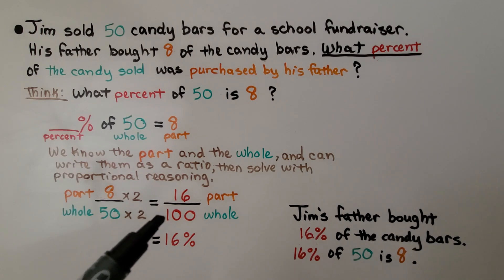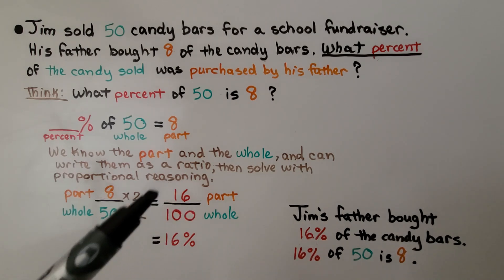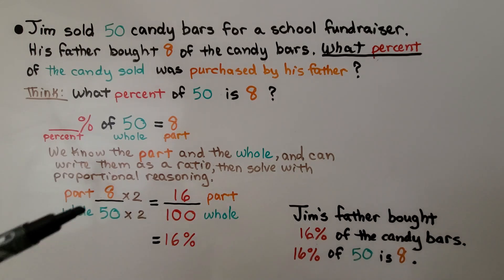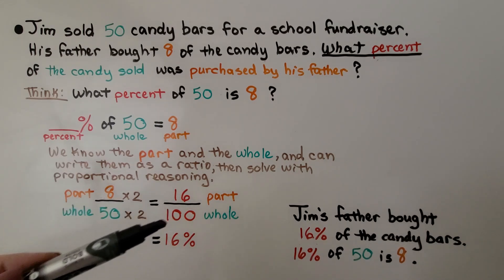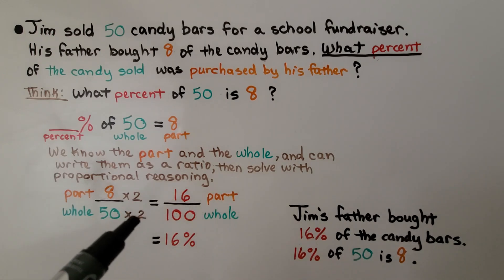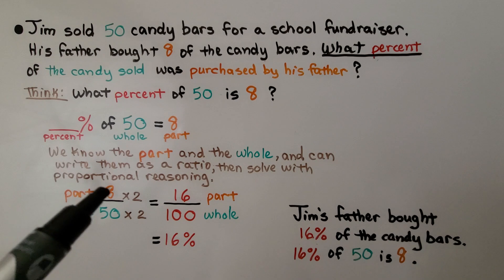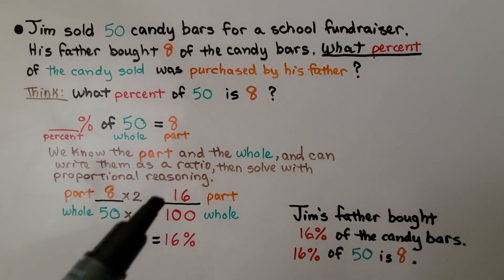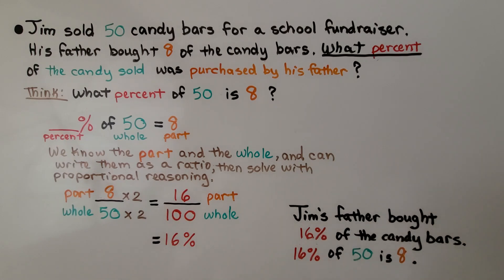We want to write it over 100. Since 50 times 2 is 100, we're going to multiply because we're going from 50 up to 100, using the factor 2. We multiply 8 times 2, which gives us 16. That's 16% — 16 hundredths. The percentage means out of 100. So Jim's father bought 16% of the candy bars. 16% of 50 is 8.